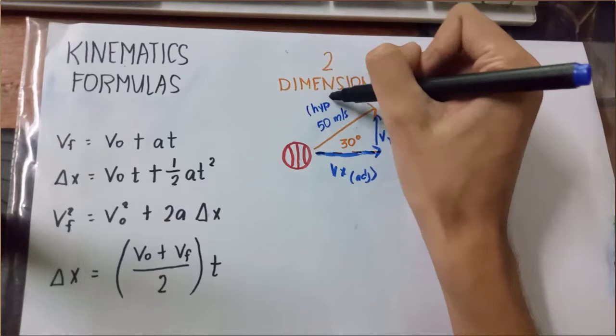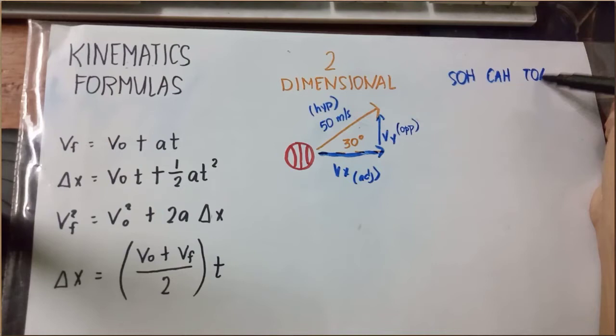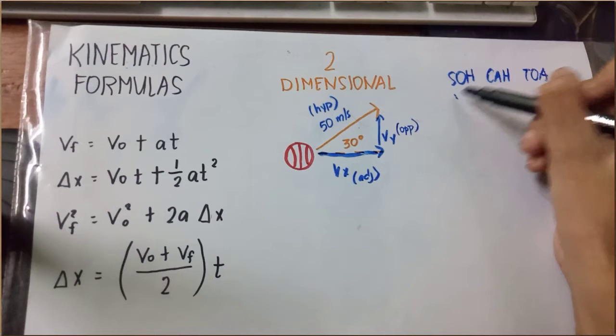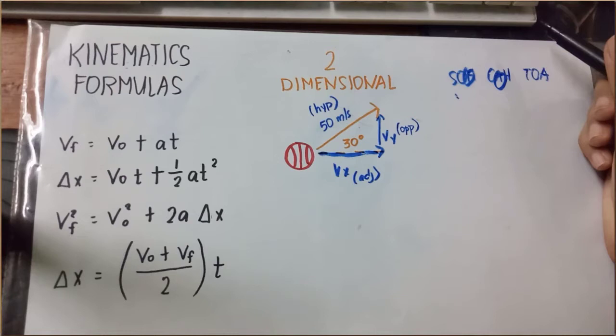At ngayon ay gagamitin natin ang SOH CAH TOA to solve these right triangles. So, sine is equal to opposite over the hypotenuse. Cosine is equal to the adjacent over the hypotenuse. At ang dalawang ito lang ang ating gagamitin.